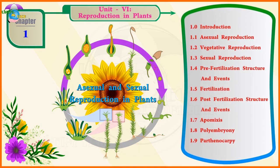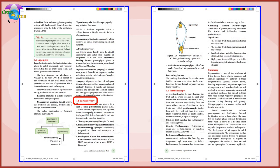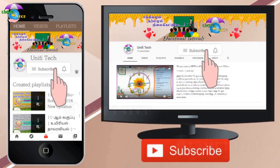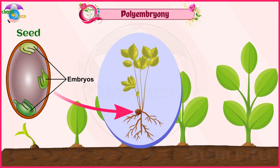Asexual and Sexual Reproduction in Plants. Topic 1.8: Polyembryony. The occurrence of more than one embryo in a seed is called Polyembryony.